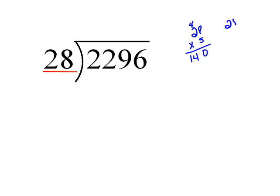Let's just start making some guesses. What about 28 times 7? Well, let's see, 8 times 7 would be 56, and 2 times 7 would be 14, plus 5 would be 19, so that would be 196. Well, again, that's getting closer to 229, but I might be able to get even closer. So let's test 28 times 8.